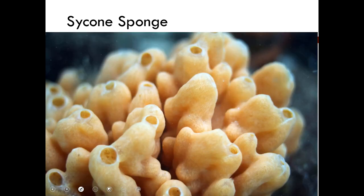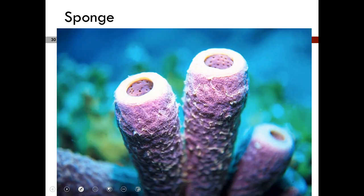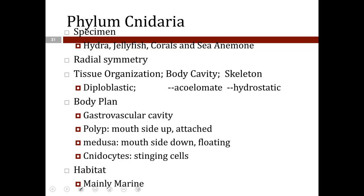The next phylum is Phylum Cnidaria. Specimens include the sea anemone, jellyfish, hydra, and corals. They exhibit radial symmetry and are diploblastic with a hydrostatic skeleton. Their body plan features a gastrovascular cavity. They come in two forms: the polyp form, with the mouth facing up and which is sessile; and the medusa form, with the mouth facing down, which is free-floating. They have stinging cells known as cnidocytes and are mainly marine animals.